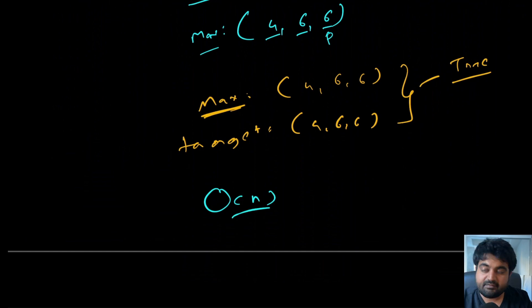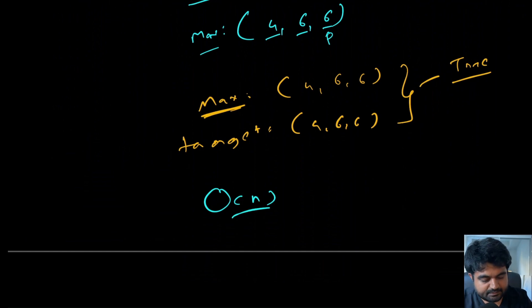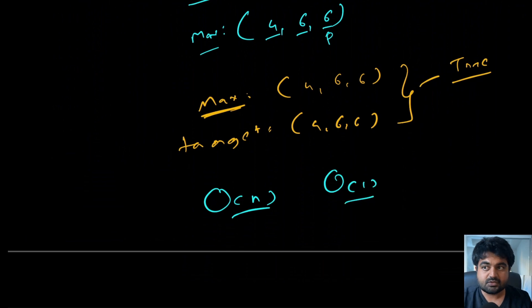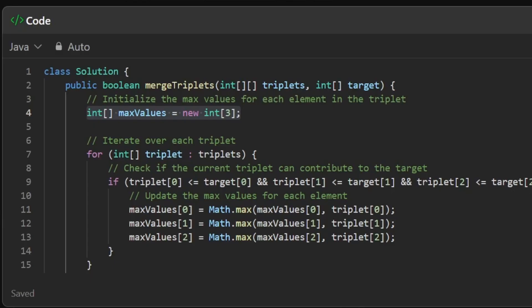This greedy solution runs in O(n) time, where n is the number of triplets. In terms of space complexity, we are not using any additional space beyond a fixed-size array, so it is O(1). Let's now look at the coding approach.